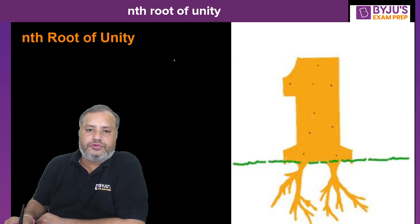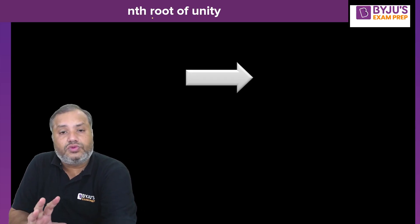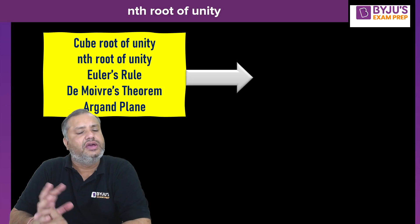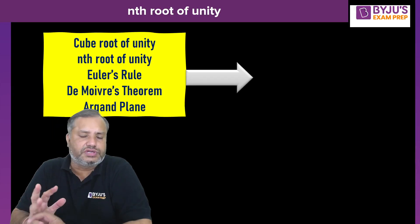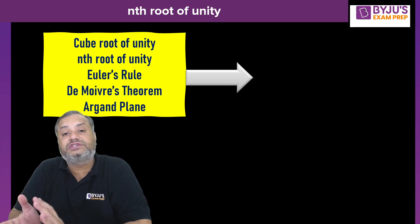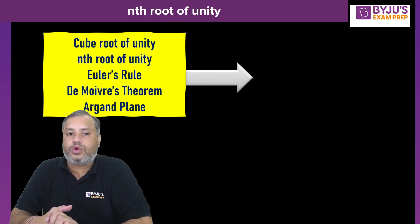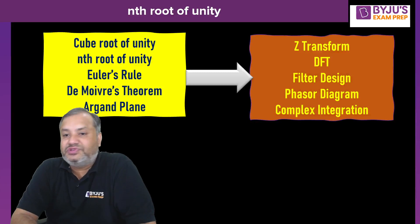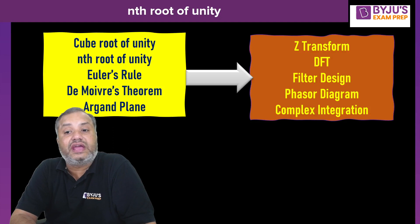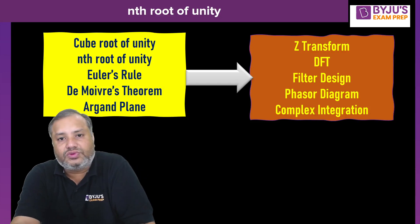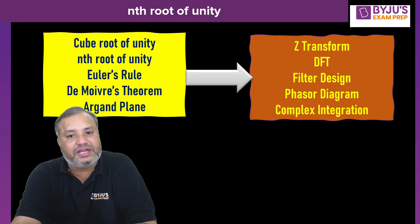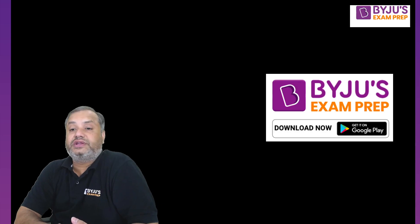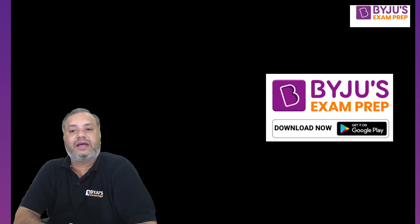So this was the concept of nth root of unity. We covered cube roots of unity, nth root of unity targeting fourth, fifth, sixth, or higher roots. Euler's rule — the relationship between complex numbers and trigonometric sine and cosine — and De Moivre's theorem are utilized here, along with the Argand plane. These concepts find applications in various branches of engineering: in EC and electrical engineering, they are used in Z-transforms, DFT, filter design, phasor diagrams, and complex integration. I hope this session helps you understand these various applications. Thank you.